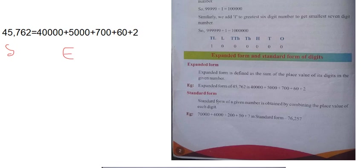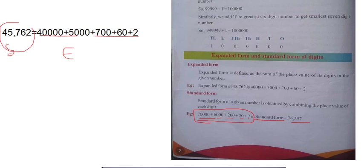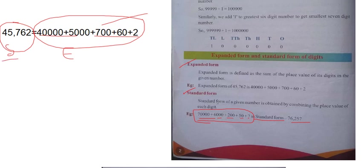The standard form of a given number is obtained by combining the place value of each digit. This is the standard form, and the expanded form is when you write it with plus signs. For example, 45,762 is the standard form, and 40,000 + 5,000 + 700 + 60 + 2 is the expanded form. Whatever numbers we commonly use like 99, 999, 89 — these are all in standard form.